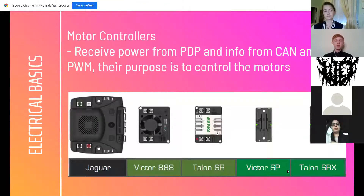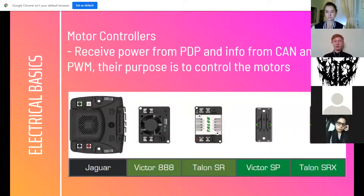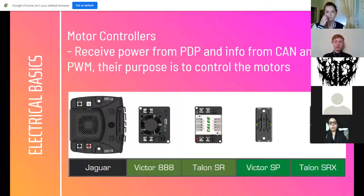You'll have plenty of different types of motor controllers depending on what type of motor you use. They receive power from the power distribution panel and information from the Controller Area Network and the PWM (pulse width modulation) wires, which allow the motors to be controlled very effectively by the code from the RoboRIO. There are five main types of motor controllers shown on the screen.